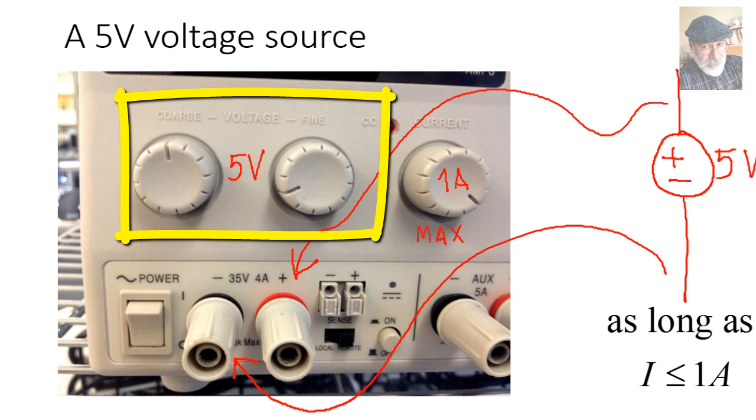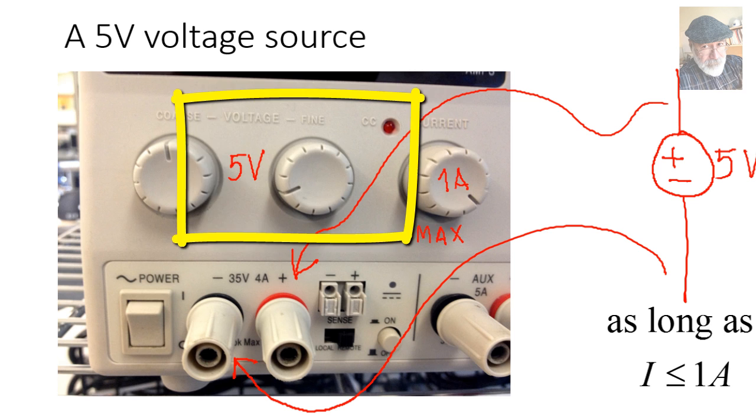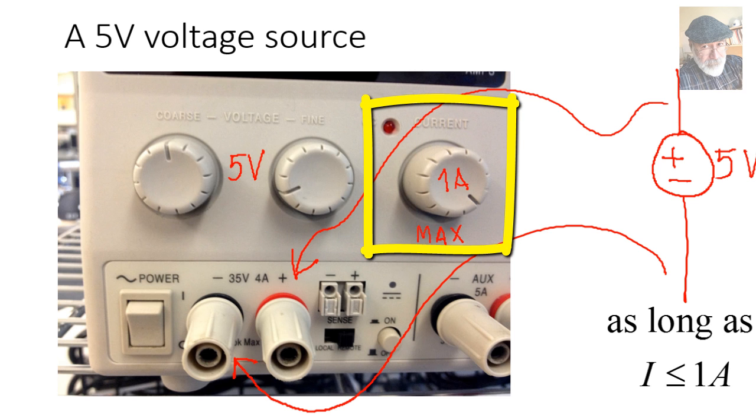With the two voltage control knobs, set the voltage as per the display up to 5V. And then, with the current knob, and again checking the display, set the current limit to 1A. Done!